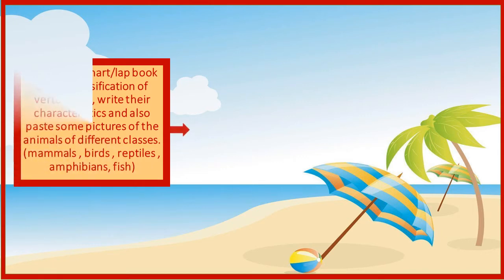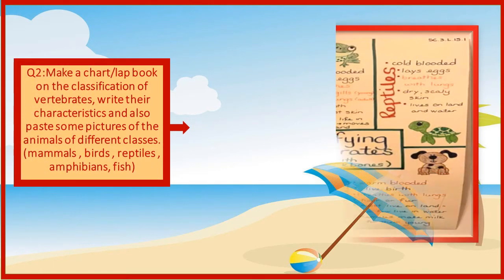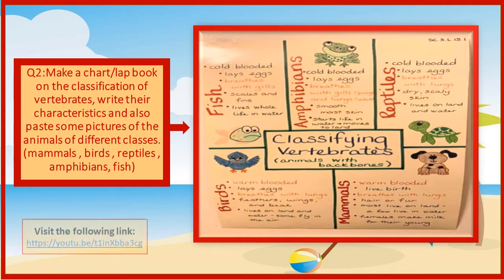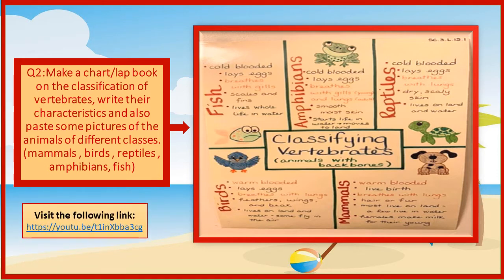My dear kids, your project number two is about classification of vertebrates. You have to make a chart or a lab book on the classification of vertebrates. As you can see in this picture, you can see how they classify different groups of vertebrates. You can paste pictures of animals from different classes like mammals, birds, fish, reptiles, and amphibians. You can also visit the following link — it will help you a lot with how to make a lab book.